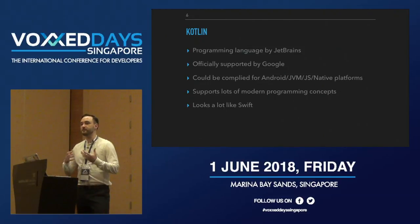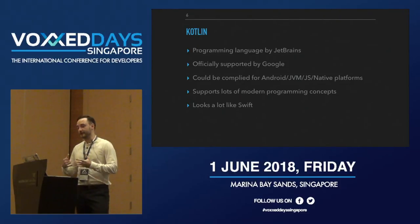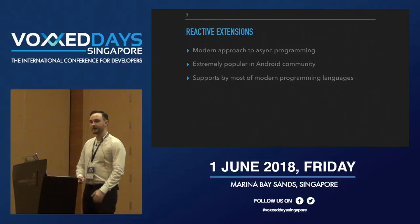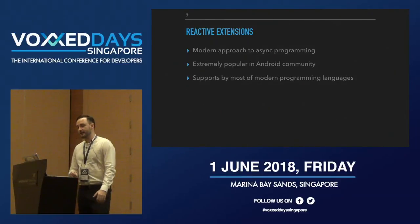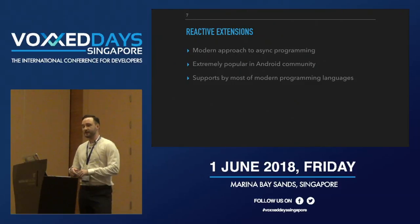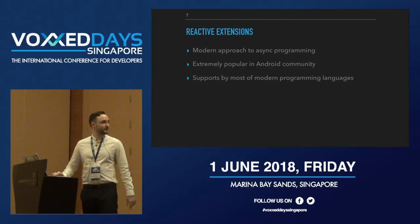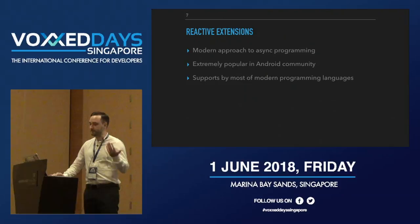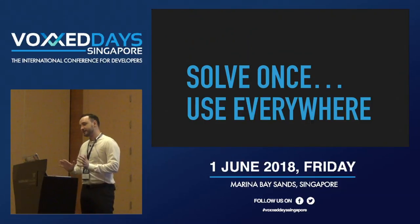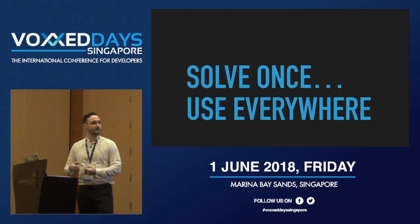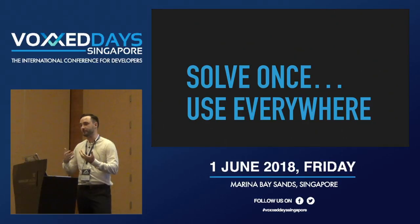Kotlin supports many modern programming language concepts including functional programming, and for iOS developers it looks a lot like Swift. Reactive extensions represent a modern approach for asynchronous programming — in JavaScript it's called RxJS, in the Java world it's called RxJava. This approach is extremely popular in the Android community, and you can find reactive extension implementations for almost every language. In this talk we'll provide solutions for solving similar problems across many parts of your applications.